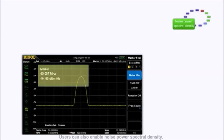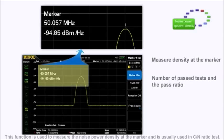Users can also enable noise power spectral density. This function is used to measure the noise power at the marker and is usually used in carrier-to-noise ratio tests.